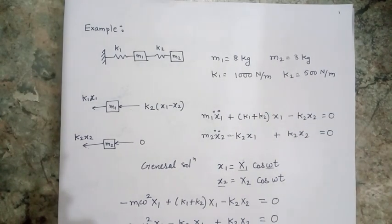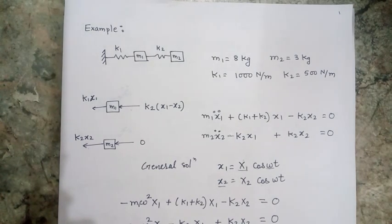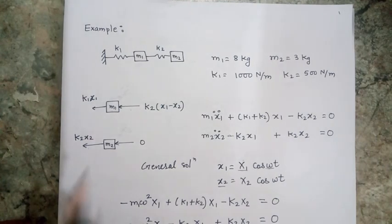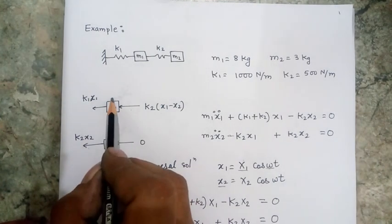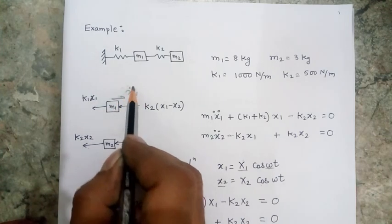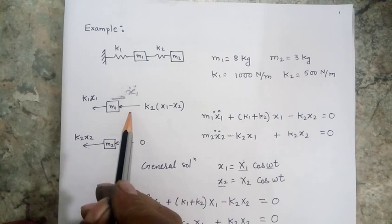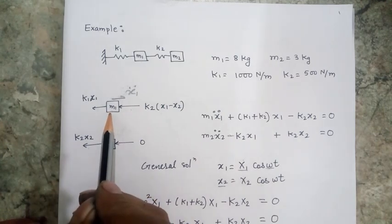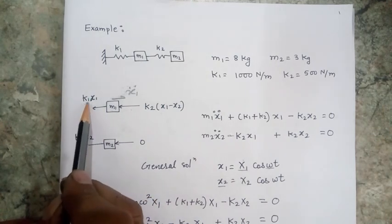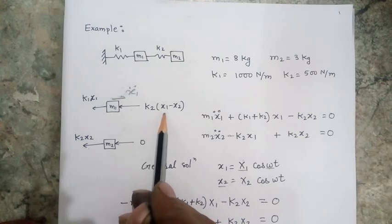As a conventional process, first I have to make the equation of motion of the system, and for that purpose I have to make the free body diagram of the two masses. Let's assume that the mass is moving in this direction with an acceleration x1 double dot, and these two spring forces are acting opposite to the direction of motion. This force is k1*x1 and the second force is k2*(x1 minus x2).